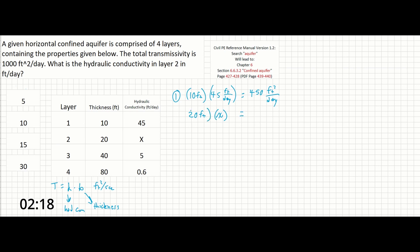Then we have for layer 3, 40 feet times 5 feet per day equals 200 feet squared per day. And then finally we have 80 feet times 0.6 feet per day. This gives us 48 feet squared per day.